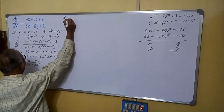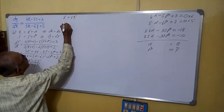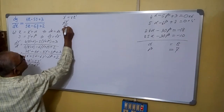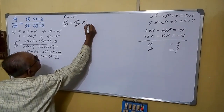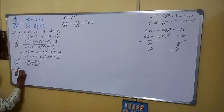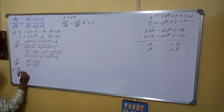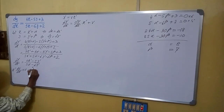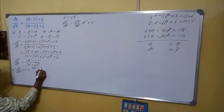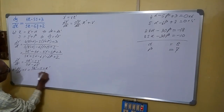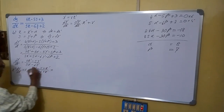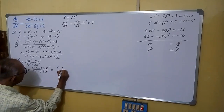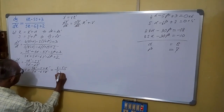For this homogeneous equation, we assume y dash equals to v times x dash. So we can write: x dash times dv by dx dash plus v equals to 4x dash minus 5vx dash divided by 5x dash minus 6vx dash. Taking x dash common from numerator and denominator and cancelling, we get 4 minus 5v divided by 5 minus 6v.